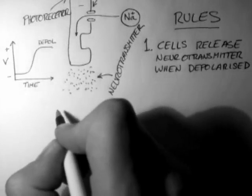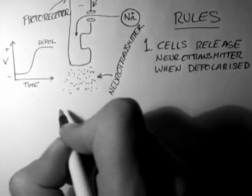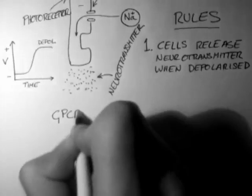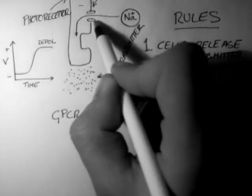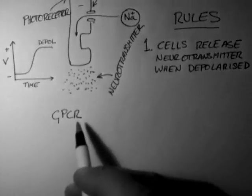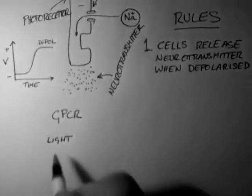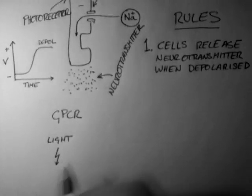Now let's see what happens when light hits the photoreceptor. This channel is controlled by what we call a GPCR, which is a G-protein coupled receptor. So let's see just quickly how this works.